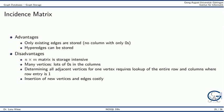The incidence matrix has the advantage that only existing edges are stored, so there are no columns with only zeros. Moreover, hyperedges can be stored by giving them their own separate edge column. However, the incidence matrix is also quite storage intensive. If there are many vertices, there will be lots of zeros in the columns when not all edges between nodes are present. Determining all adjacent vertices requires first looking up ones in the entire row, then looking up entries in the corresponding columns. Inserting a new vertex requires adding a new row, and inserting a new edge requires adding a new column, which is costly.